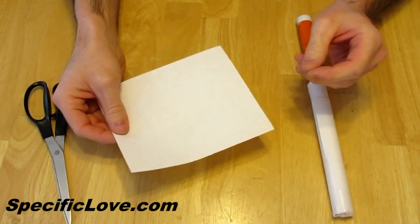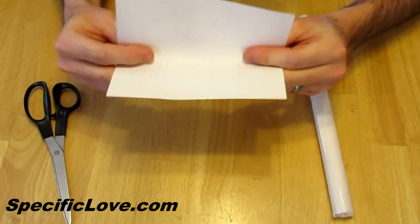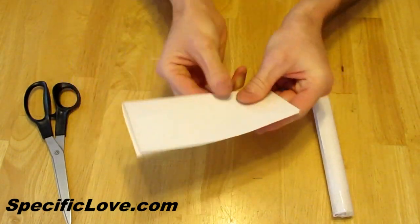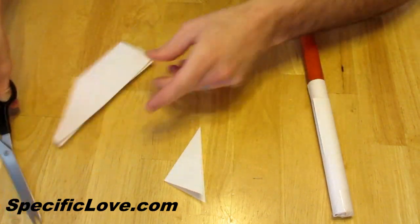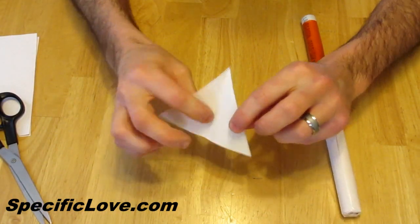Take your second piece of paper, the one that you initially cut off, and you want to fold it in half, use your scissors to cut a large triangle. Now you've just created the wings for your rocket.